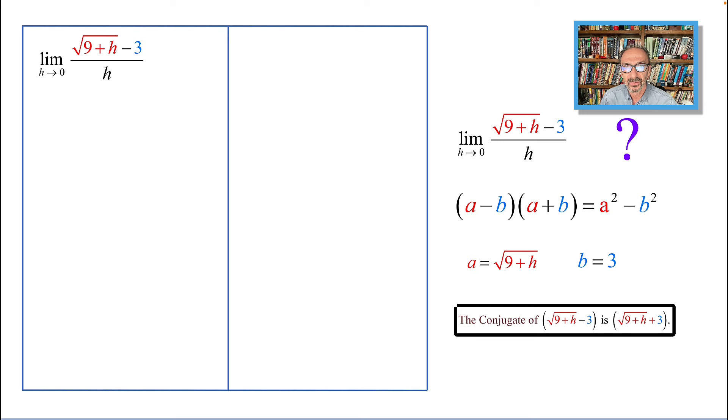So on the left I have limit square root of 9 plus h minus 3 divided by h as h approaches zero. We're gonna bring the conjugate to the numerator. As you can see, this is a conjugate we discussed that just a minute ago, and that's the conjugate.